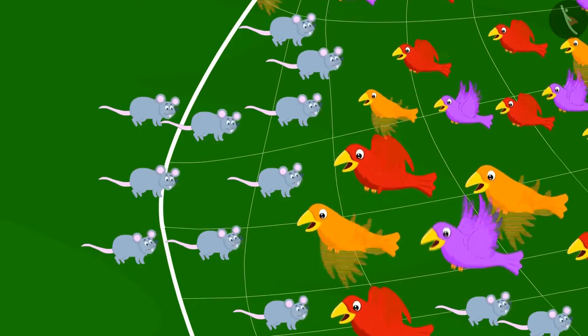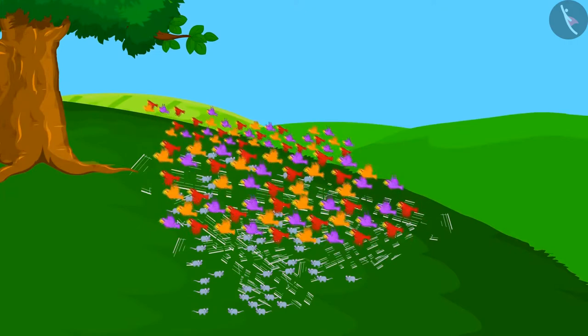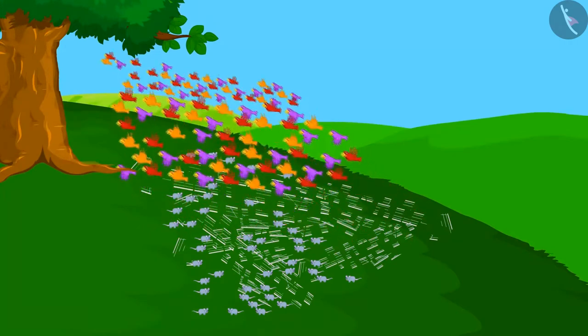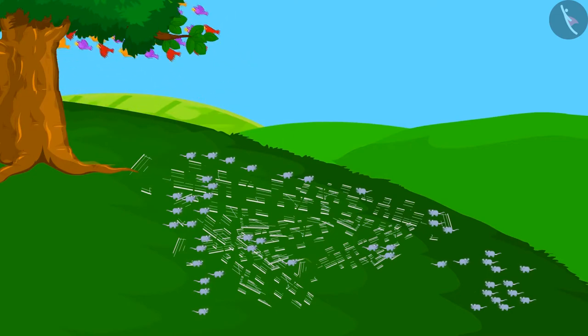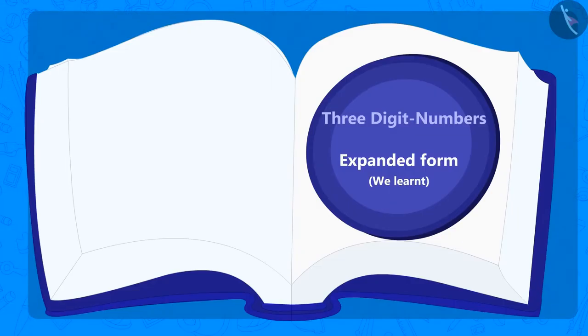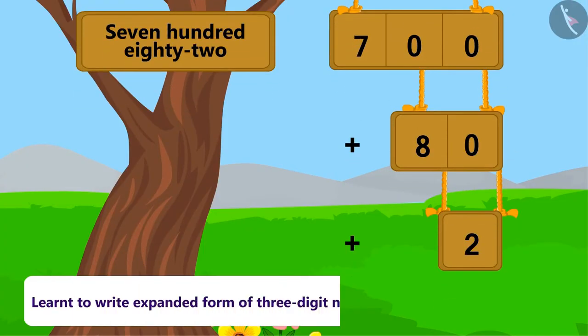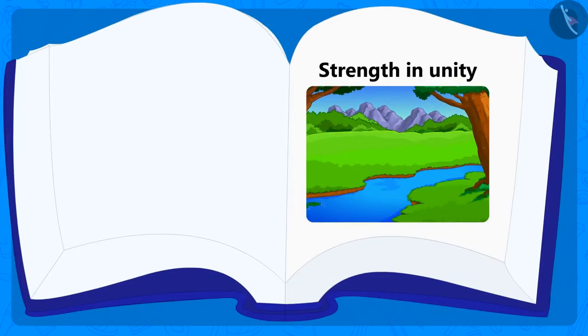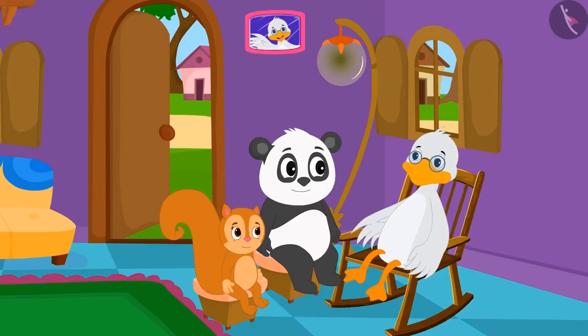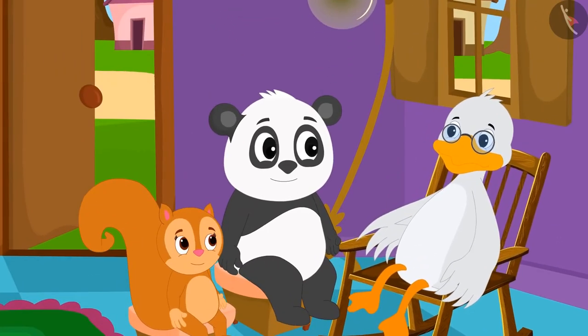569 rats got together and cut the net. The birds thanked them and happily flew to their home. So children, you saw that there is a lot of strength in unity. Children, we learned to write the expanded form of three-digit numbers with the help of number name. We also learned that there is always a lot of strength in unity. In the next video, we will cover some common mistakes related to expanded form.